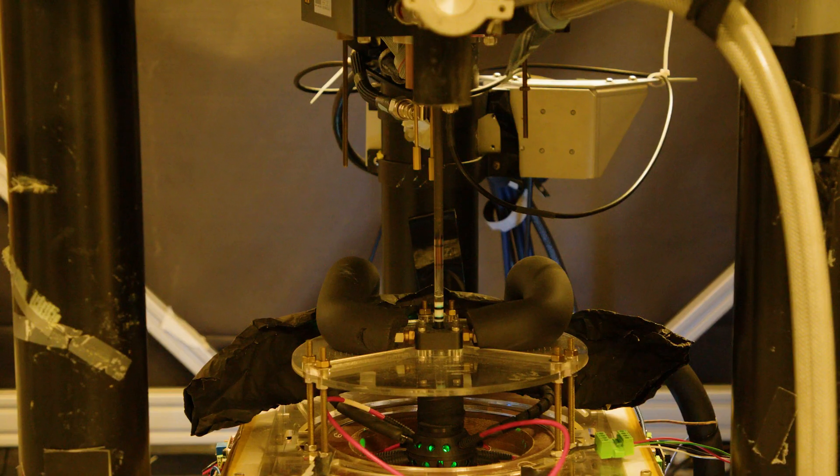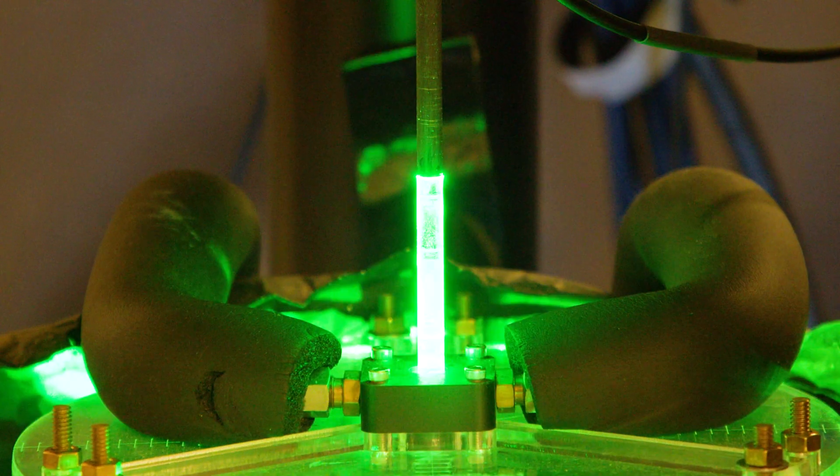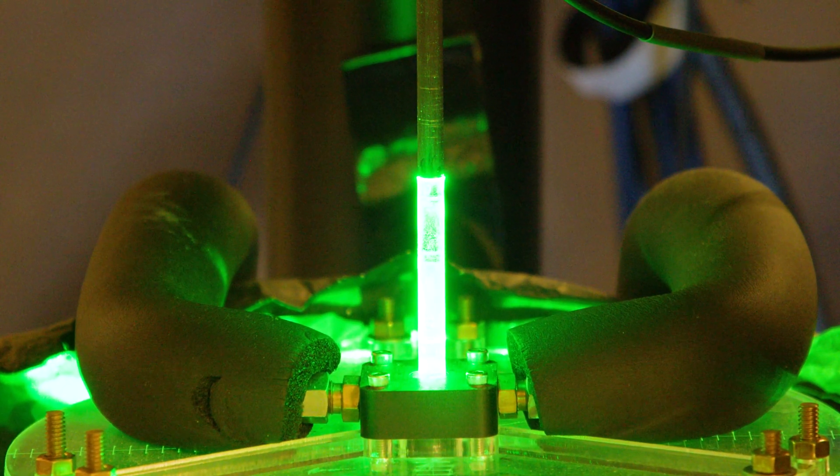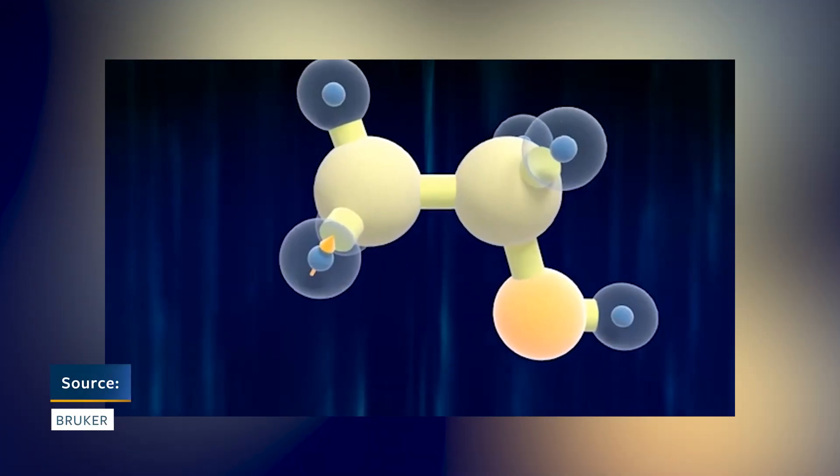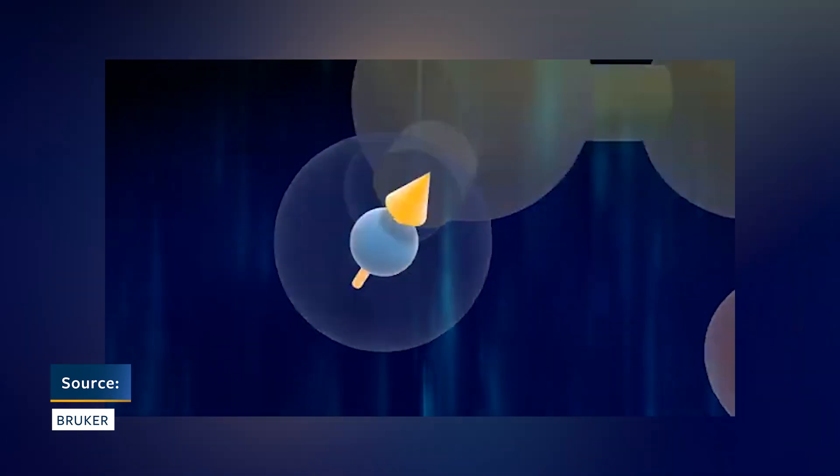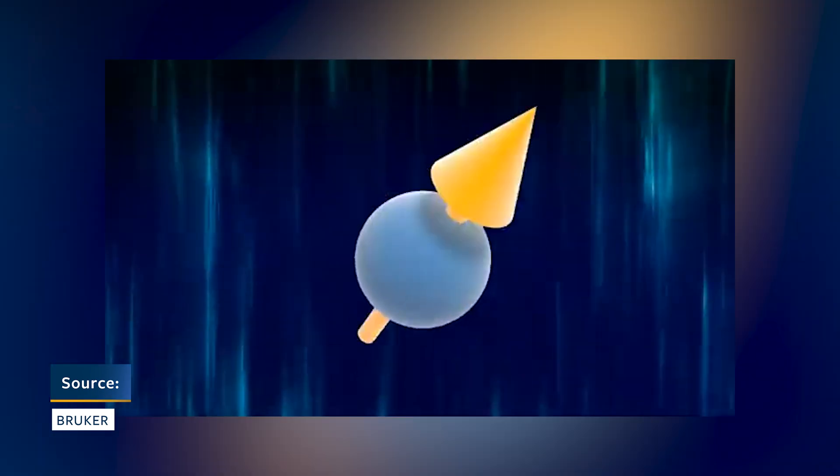Nuclear magnetic resonance relies on spin, a property of particles such as protons and electrons, that causes the particles to rotate like a toy top and act like a magnet when exposed to a strong magnetic field.